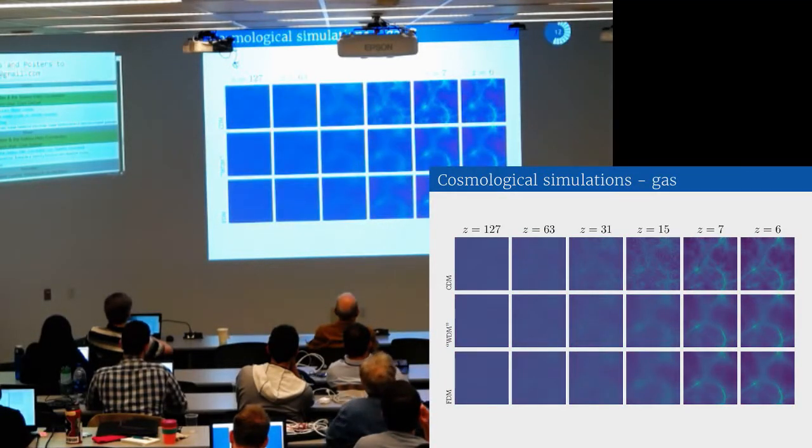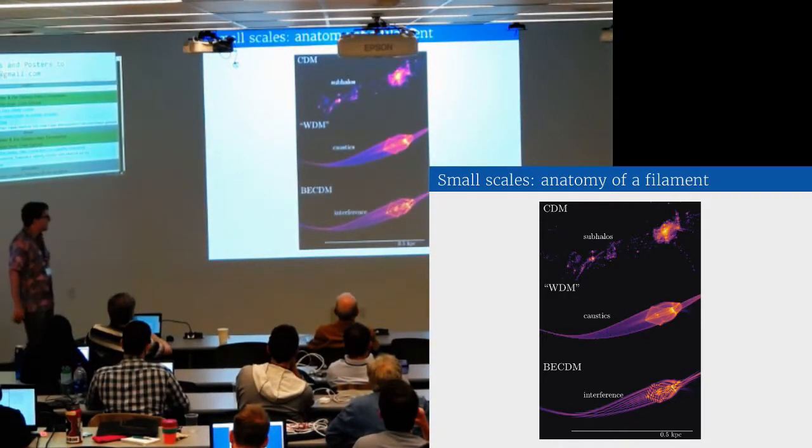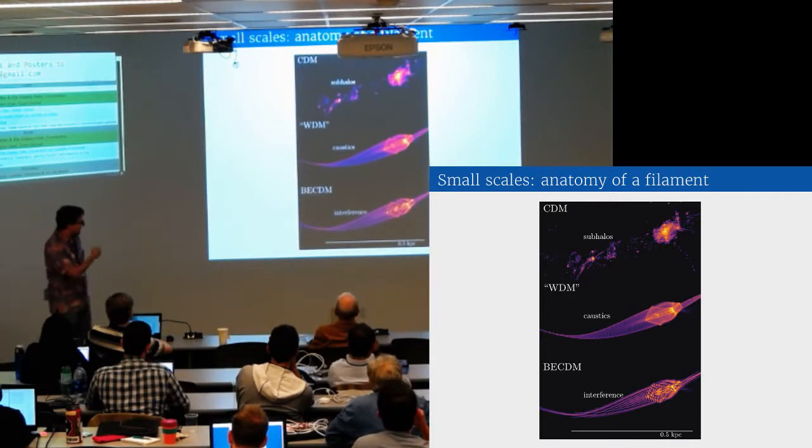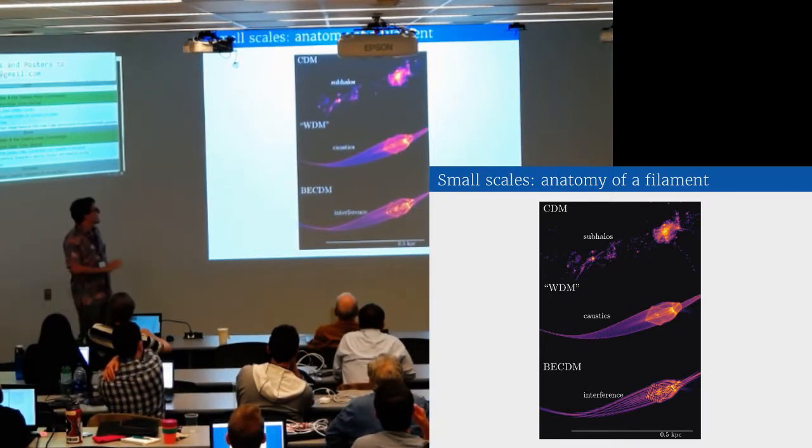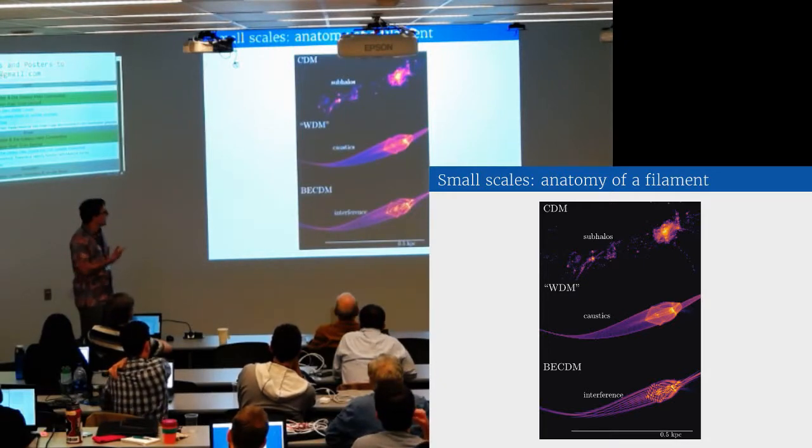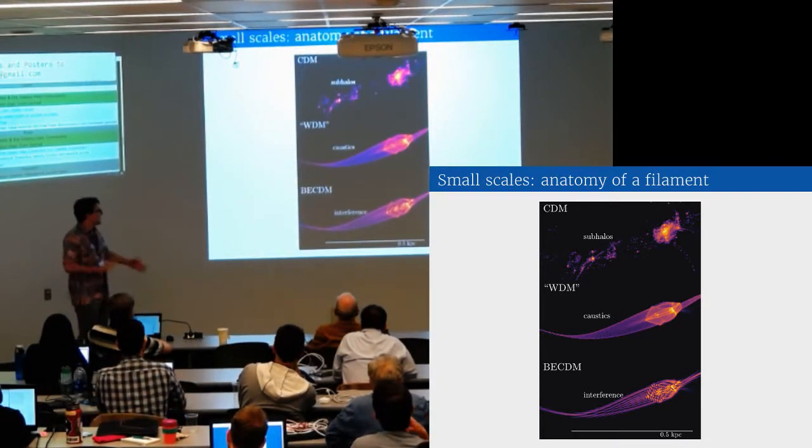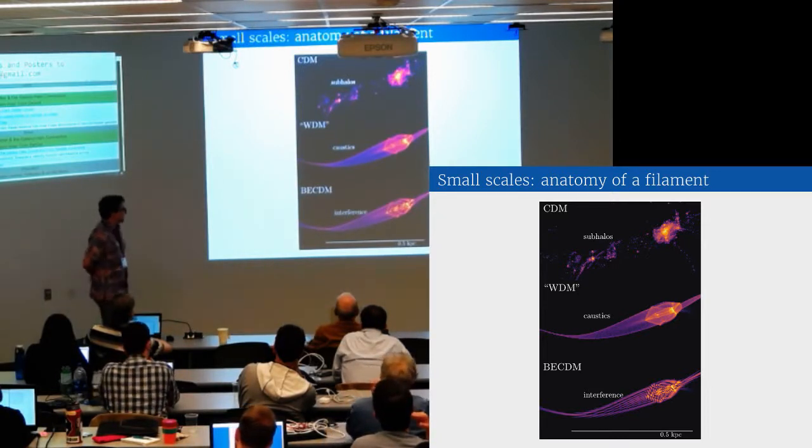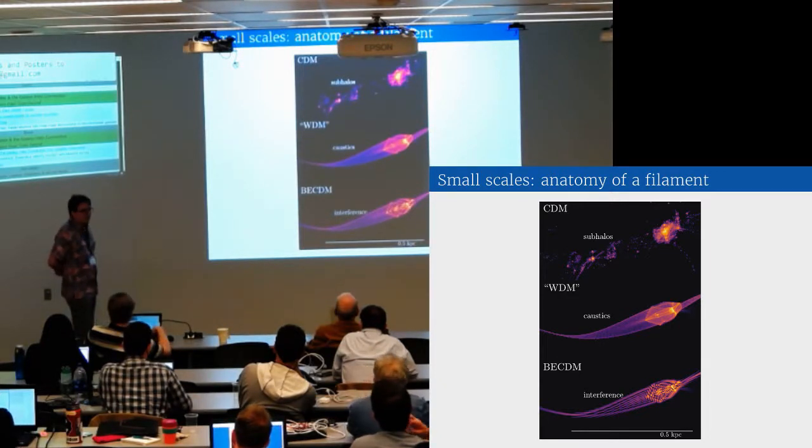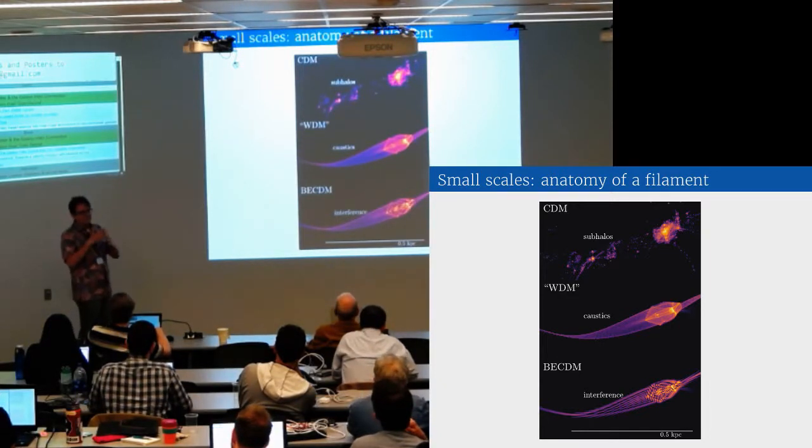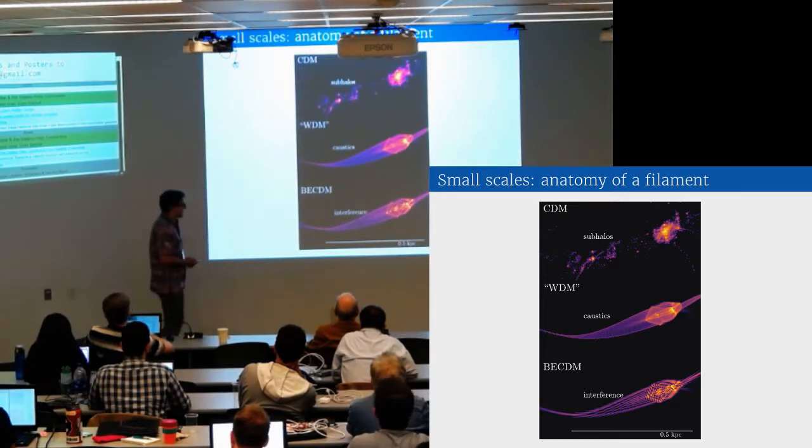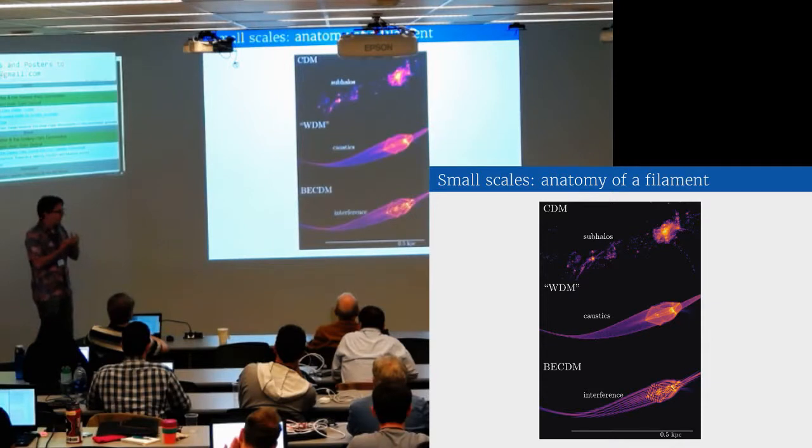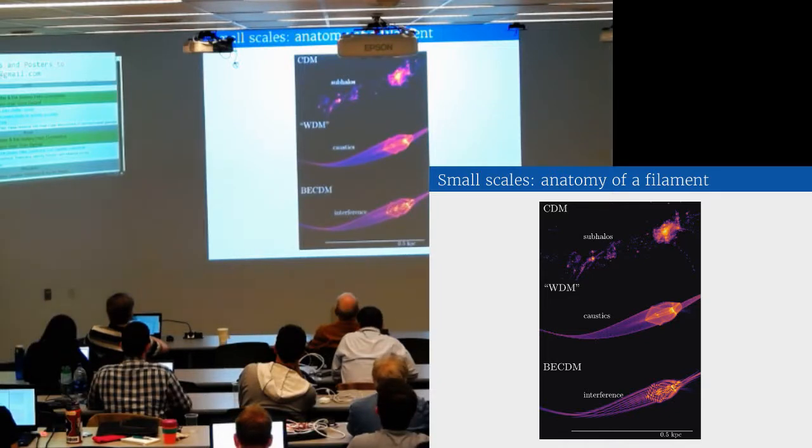But if we zoom into the details, this is showing a slice through a cosmic web filament on a scale of 0.5 megaparsec. Cold dark matter forms subhalos on all scales. Warm dark matter has these really rich caustic structures from your phase sheets winding up. And then in fuzzy dark matter on the bottom, you have these interference patterns caused by wave effects. When your phase sheet is only crossed a few times, these interference patterns are actually quite coherent and ordered. Once they've crossed multiple times, you can get quite chaotic-looking interference patterns at the centers of halos.